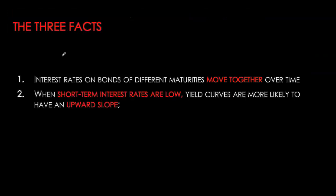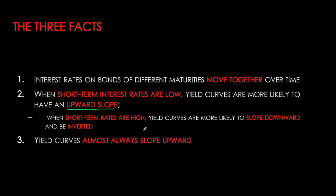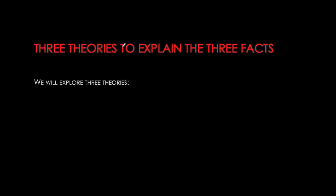Third, when short-term interest rates are very low — like in 2010 right after the financial crisis — long-term yields are much higher, giving an upward-sloping yield curve. Conversely, when short-term yields are very high, as in 1981, the yield curve tends to become inverted because long-term yields are quite low. Lastly, most of the time the yield curve tends to slope upward, with i1t representing the yield on a one-year bond and int representing the yield on an n-year bond today.